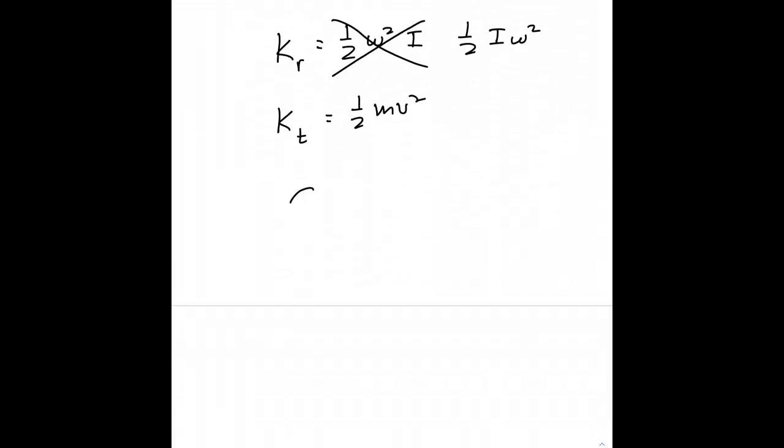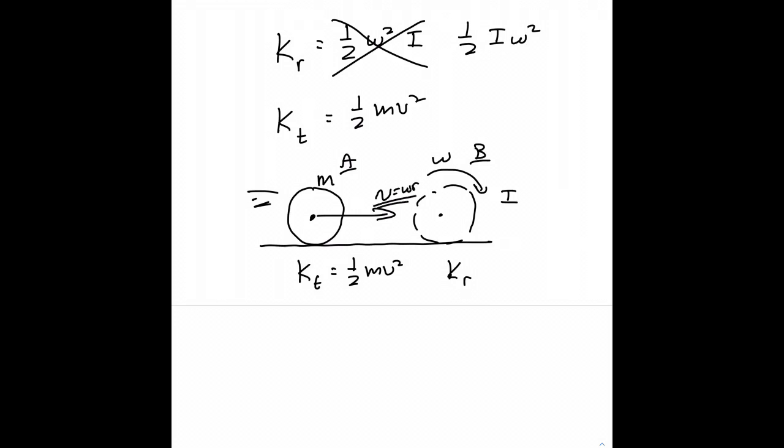So back to a disk or some round object that rolls across a flat surface. As it translates with a speed v, this object with a total mass of m has some translational kinetic energy, one-half m v squared, but the object is also rotating about its center as it moves from point A to point B, and so it has some rotational kinetic energy, and the disk has a rotational inertia, an angular speed, omega. v is equal to omega times r, by the way.